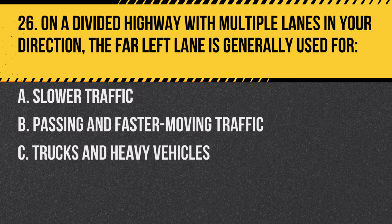Question 26. On a divided highway with multiple lanes in your direction, the far left lane is generally used for: a. Slower traffic. b. Passing and faster moving traffic. c. Trucks and heavy vehicles. Answer: b. Passing and faster moving traffic. The left lane is typically for drivers who are overtaking others.